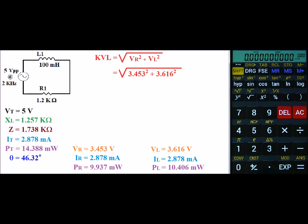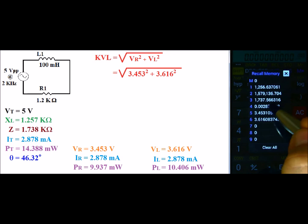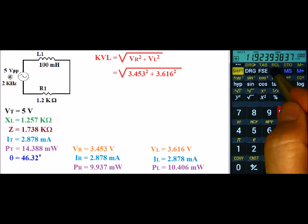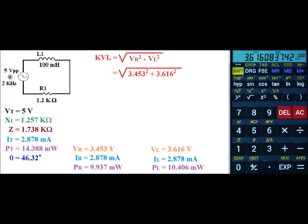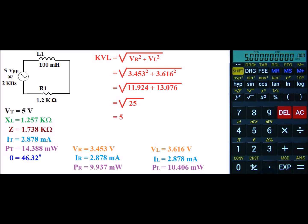So we have the square root of 3.453 squared plus 3.616 squared. So I'm going to go ahead and recall voltage of the resistor, square it, which we get 11.92 plus. And I'll go ahead and recall the value of the voltage for the inductor and square that. And that gives us a value of the square root of 25. So if I hit square root, I end up with 5 volts.